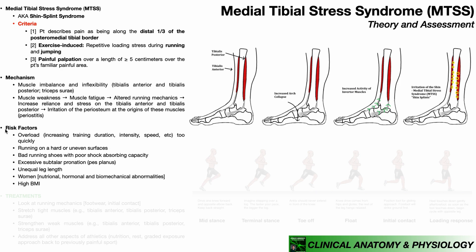What are the risk factors for developing medial tibial stress syndrome? The first is overload, particularly overload that occurs too quickly. We should always progress exercises, but never too quickly. If you progress training duration, intensity, or speed too quickly, you're not giving these muscles a chance to adapt, and that can lead to irritation of the periosteum and the development of shin splints.